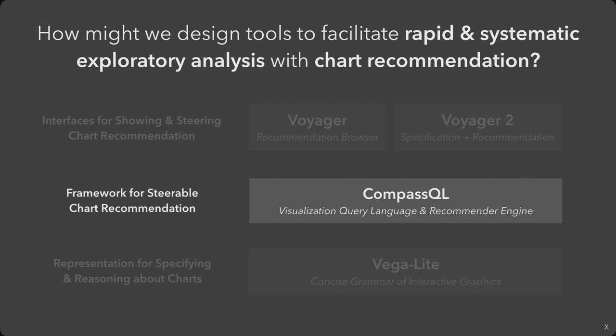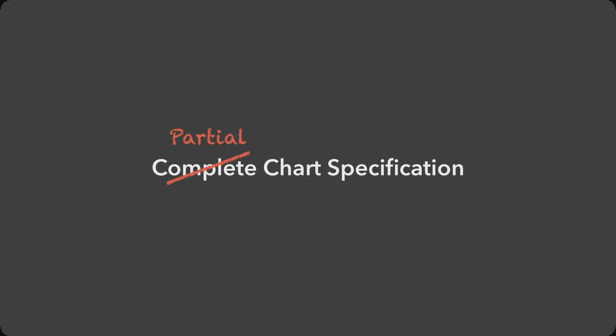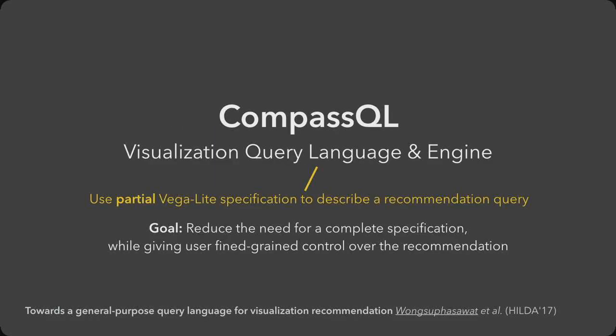Besides supporting manual chart creation, Vega-Lite can support chart recommendation through CompassQL. Manual chart creation is tedious because users have to provide complete specifications of mark type, encoding, and transformations. The key idea in CompassQL is to let users provide only a partial specification as a recommendation query. This reduces the need to provide a complete specification while still giving fine-grained control over the recommendation.